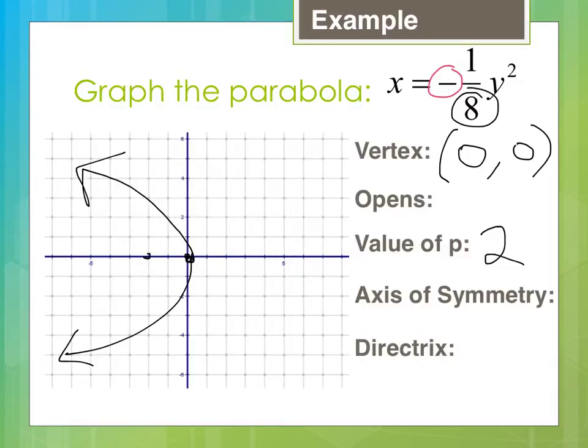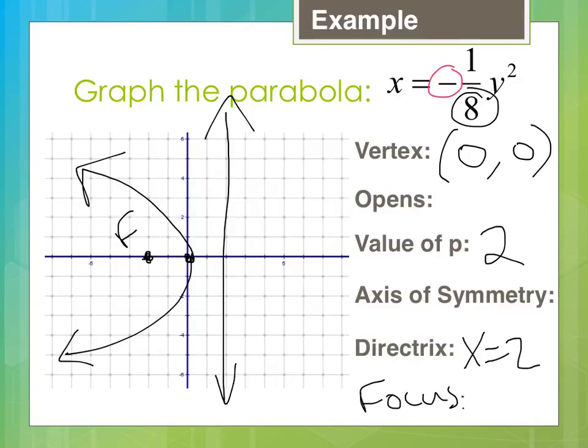That means I'm going 2 to the left for my focus. I'm going 2 to the right for my directrix. So my directrix is x equals positive 2. My focus is negative 2, 0.